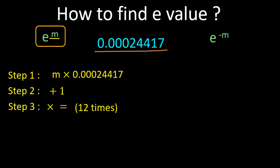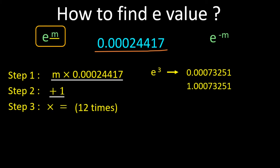We will see this trick with an example. We have to find the value of e power 3, so here our m is 3. Multiply 3 by 0.00024417 on your calculator and you will get 0.0007325. After doing this multiplication, add 1 to it — step two — giving 1.0007325. Now in the third step, press multiply and equal to for 12 times on your calculator. After pressing it 12 times, you will get the answer 20.0707. This is the answer of e power 3.